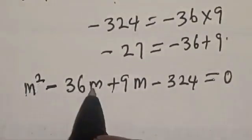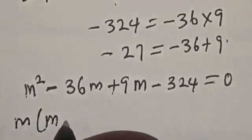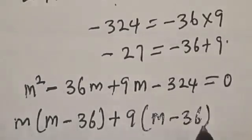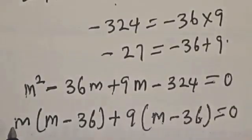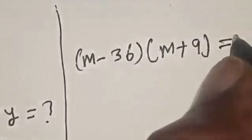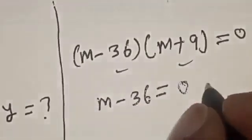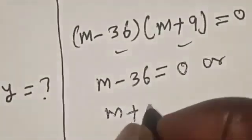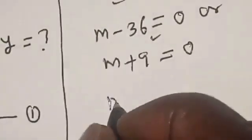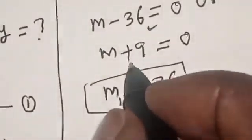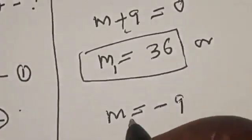We have m squared minus 36m plus 9m minus 324 is equal to 0. Factoring by grouping: m(m minus 36) plus 9(m minus 36) is equal to 0. So we have (m minus 36)(m plus 9) is equal to 0. Therefore m equals 36, which we call m1, or m equals minus 9, which we call m2.